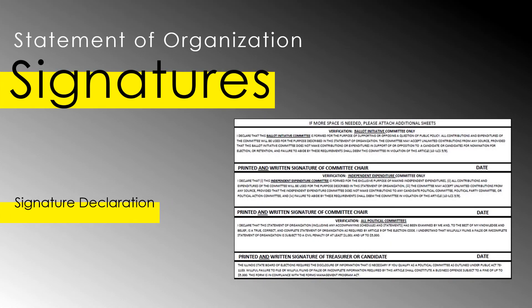Once the Statement of Organization form has been completed, it will need to be signed. There are three separate lines to sign, depending on the committee's designation. The top signature line is for the signature of the committee chair for ballot initiative committees only. The middle signature line is only for the signature of the committee chair for independent expenditure committees. The bottom signature line is for all committees and requires the signature of either the treasurer or candidate of the committee. Ballot initiative and independent expenditure committees will need the committee treasurer signature here in addition to the chair's signature above.